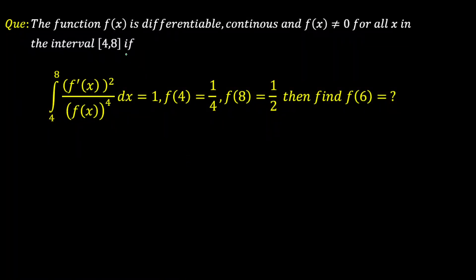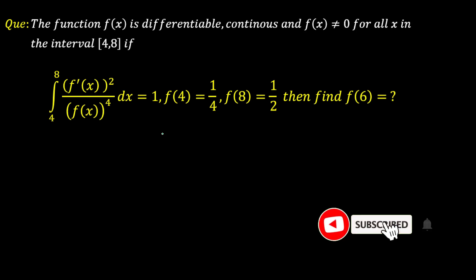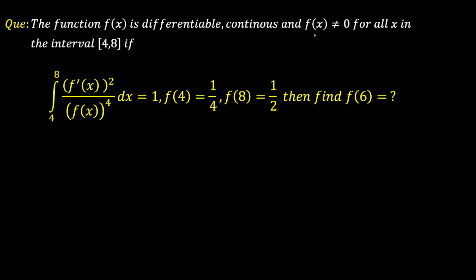Hello everyone. Today's question is something special — I consider this one of the difficult questions in the series. The question is: if f(x) is differentiable, continuous, and f(x) cannot be 0 for all x in the interval [4, 8].